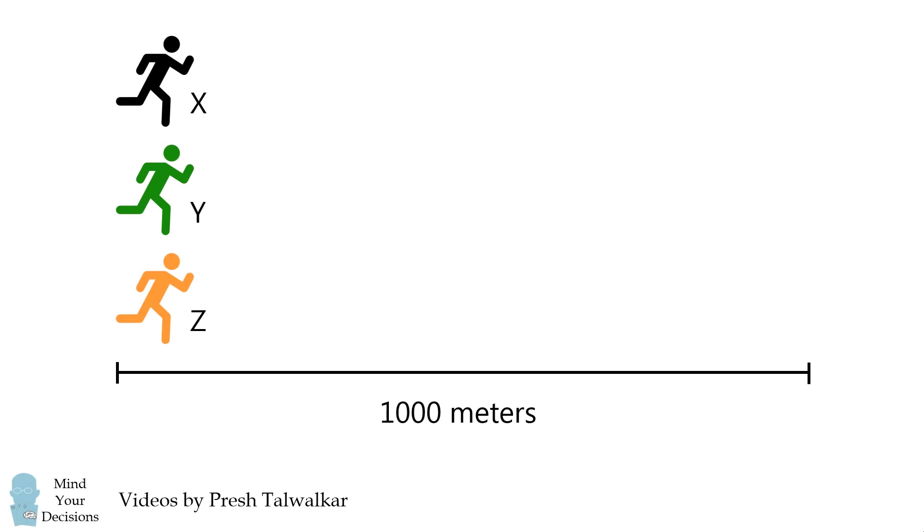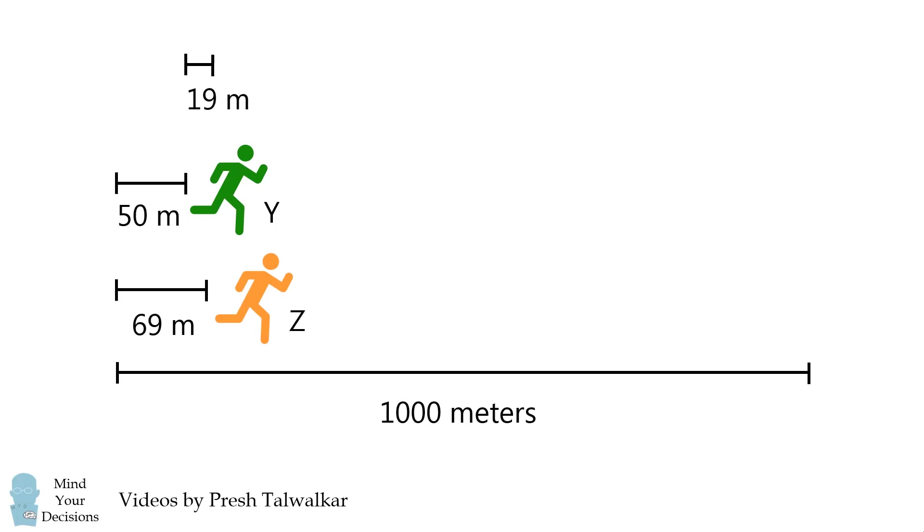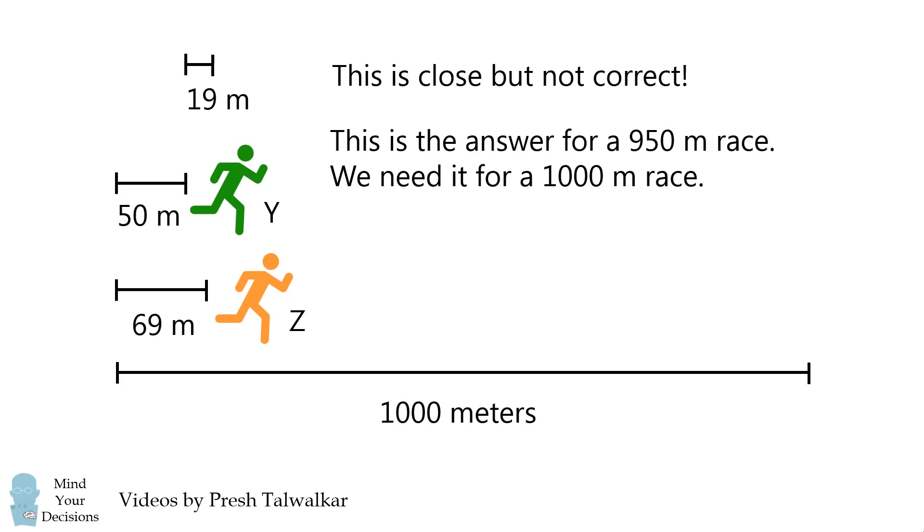Now many people would think like this. X gives Y a start of 50 meters and X gives Z a start of 69 meters. So comparing Y and Z, we have a difference of 19 meters. This is close but not the correct answer. The reason is that Y is only running 950 meters. We need the answer for a 1000 meter race, so let's go through the calculation.